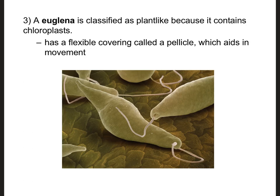Our third protist to know is our plant-like protist — it is called euglena. It's considered plant-like because it has chloroplasts, but what's weird about this guy is that he's both autotrophic and heterotrophic. He can do photosynthesis, making him autotrophic, but he can also use his flagella to sweep food into his mouth opening, making him a heterotroph too. These guys are covered with a flexible covering called a pellicle, which aids in movement — the euglena moves almost like an inchworm, scrunching up and releasing to swim around.